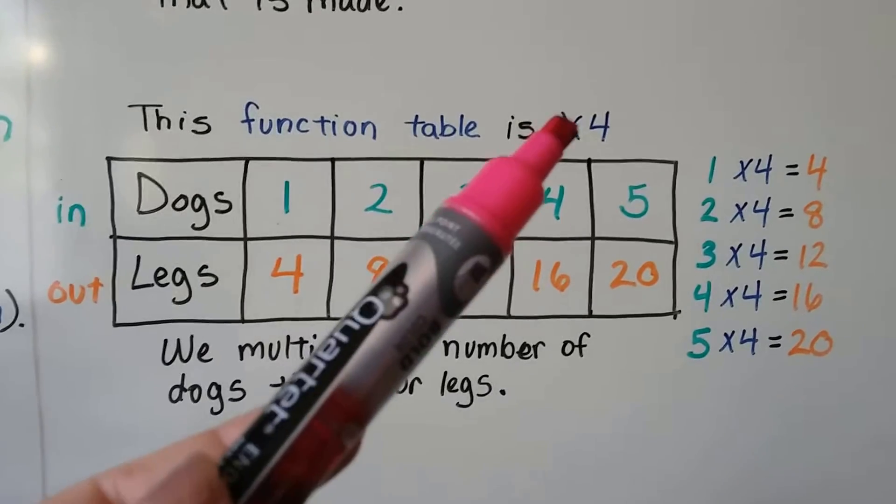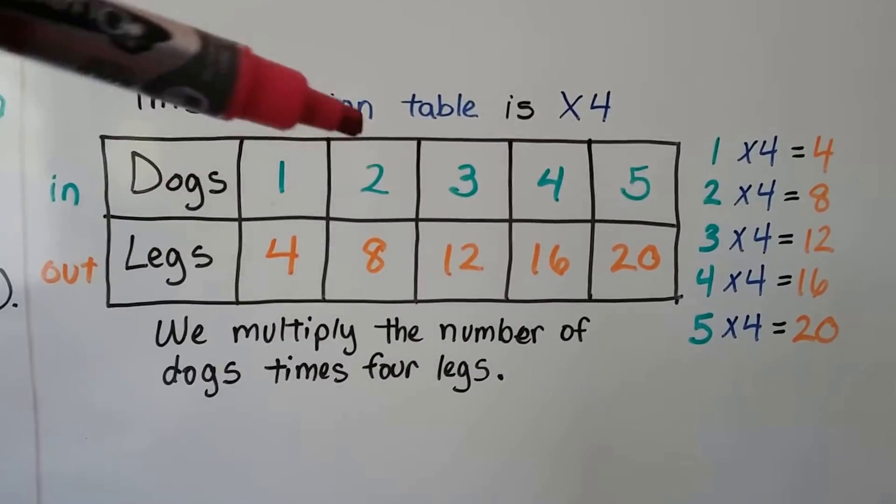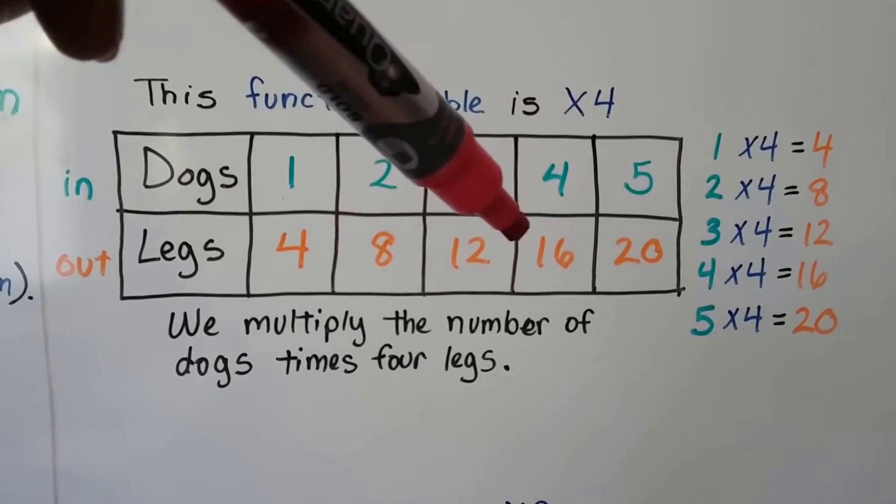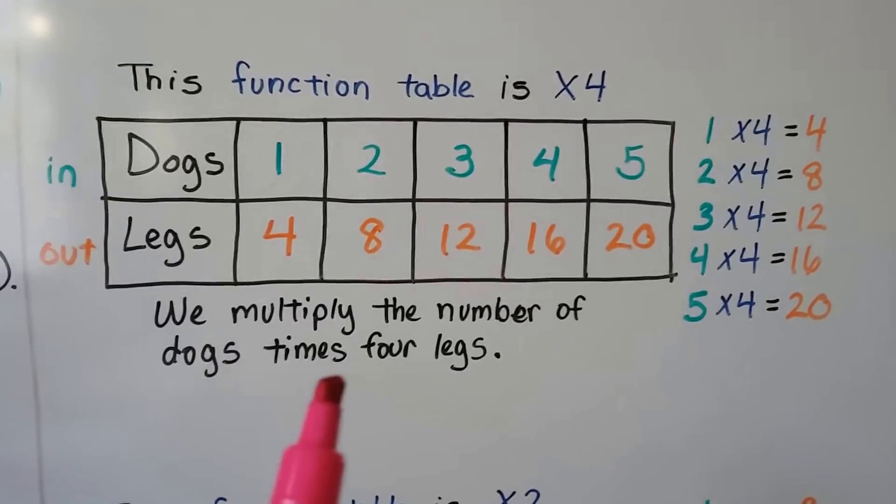If we have 3 dogs, 3 times 4 is 12 legs. So for every additional dog we're putting in, we're multiplying it by 4, and that's how many legs are going to come out. We multiply the number of dogs times 4 legs.